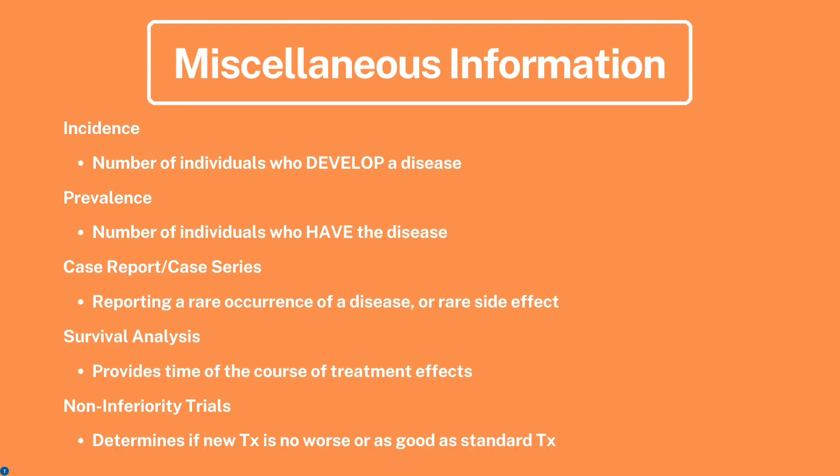Now for some miscellaneous terms: incidence is the number of individuals who develop a disease; prevalence is the number of individuals who have the disease. A case report or case series involves reporting a rare occurrence of a disease or rare side effect. Survival analysis provides the time course of treatment effects. Non-inferiority trials determine if a new treatment is no worse than, or as good as, the standard treatment.